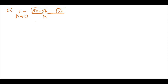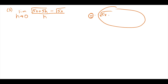For this third question, notice there are two variables, but the trick is you only replace h with 0. If you try substitution, you'd have the square root of (5x plus 5 times 0) minus square root of 5x over h equals 0 — giving square root 5x minus square root 5x over 0, which is 0 over 0. That's indeterminate, meaning we need more algebra.